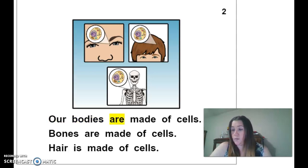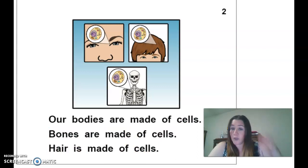Our bodies are made of cells. Bones are made of cells. Hair is made of cells. So your hair, your fingernails, your eyes, your nose, your tongue, your bones, all of it is made up of a whole bunch of little cells.